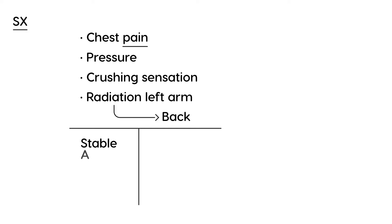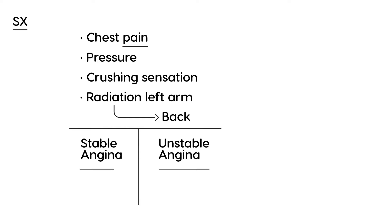There are two terms that are really important when it comes to angina: stable angina and unstable angina. The simplest way to describe the difference is that unstable angina is chest pain that occurs at rest, while stable angina occurs with exertion. Naturally, unstable angina is the more serious one.